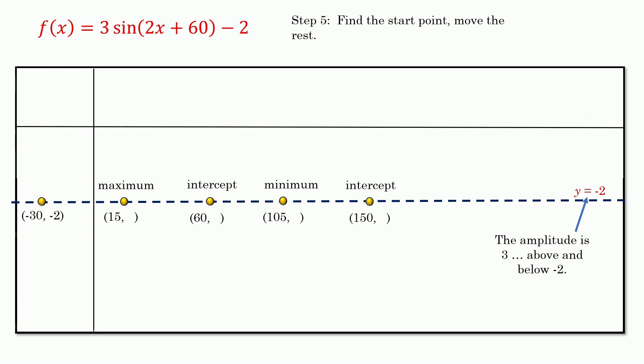Not a big deal. If I take my maximum, add three. So from negative two, if I add three, I end up at one. The next one stays right where it is, it's on negative two. So we have 60, negative two. The minimum right here, we're going to start at negative two, we're going to go down three, that's negative five. So I have 105, negative five. And last one, it's on the midline, negative two. So 150, negative two.